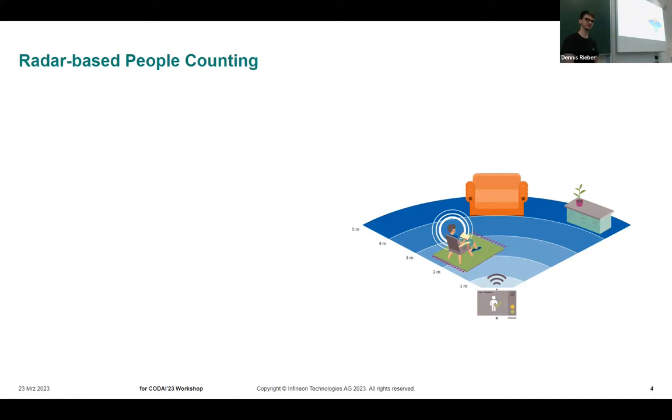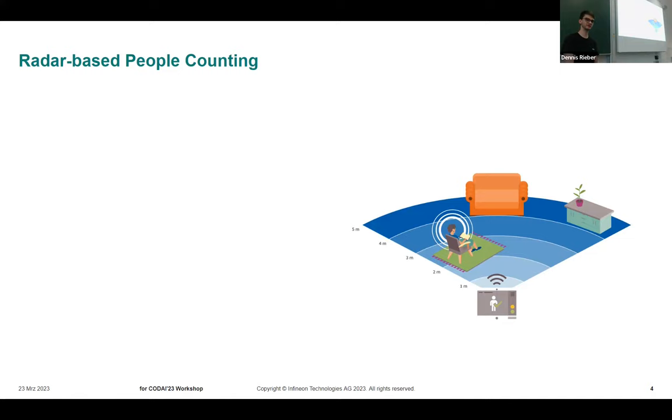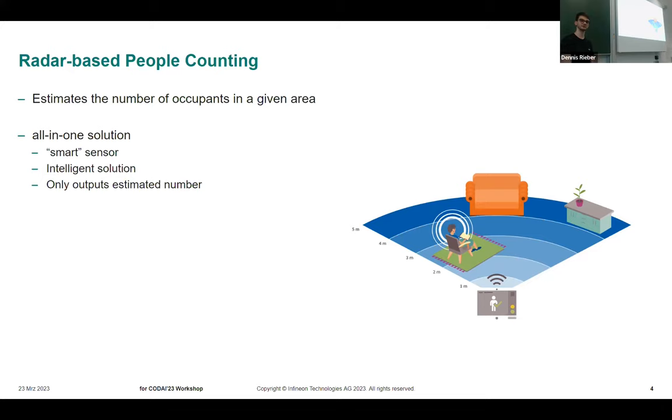Now for the application, we are trying to build a radar-based people counting solution. That's basically a system that uses radar sensors for acquiring data to estimate the number of people in a surveyed area, or the occupancy level of that area. We want to build an all-in-one solution, not only a dumb sensor that just acquires data, but with the capability to understand it. So it will output just the estimated occupancy level of that area.